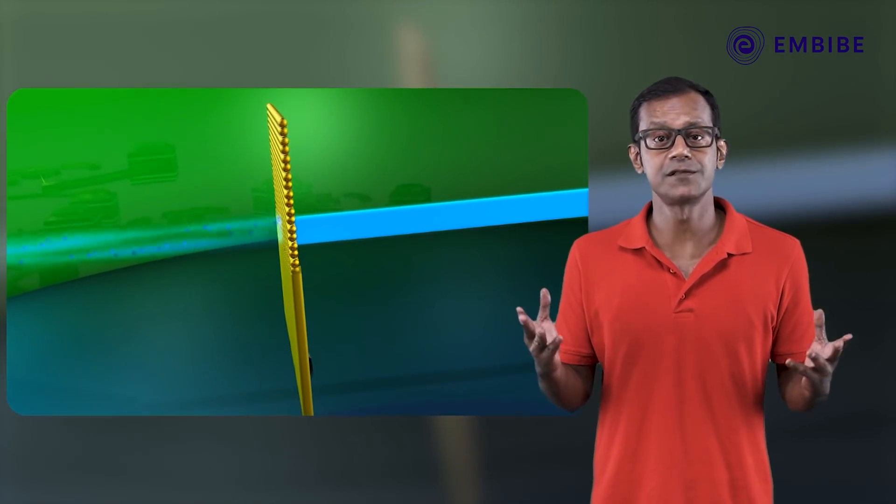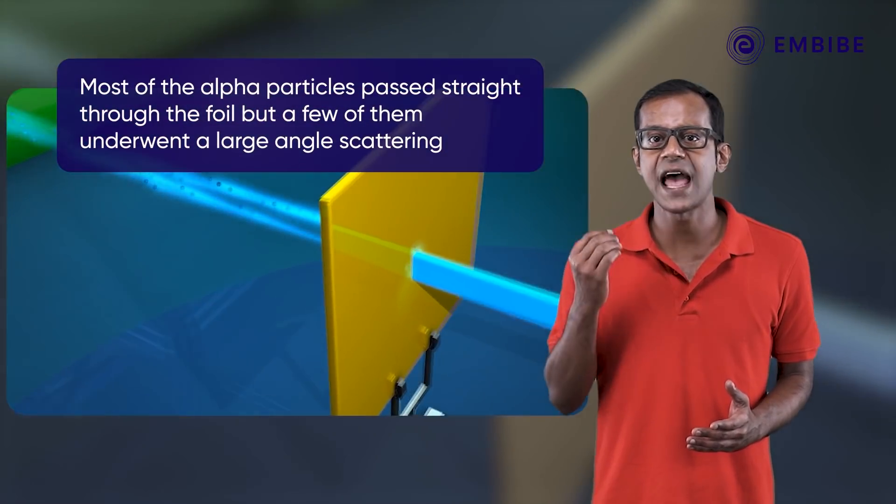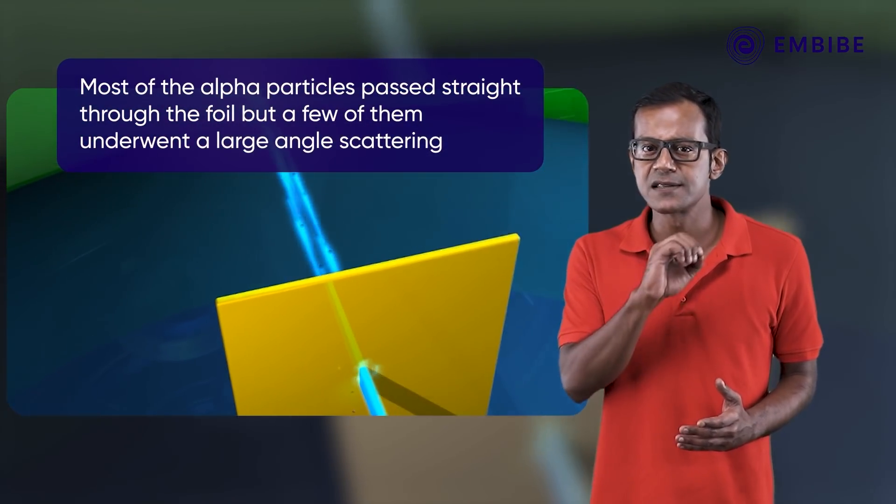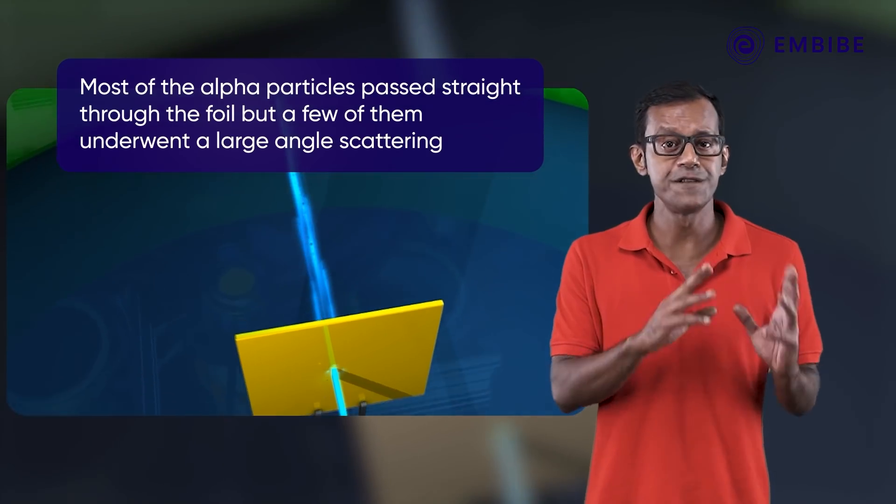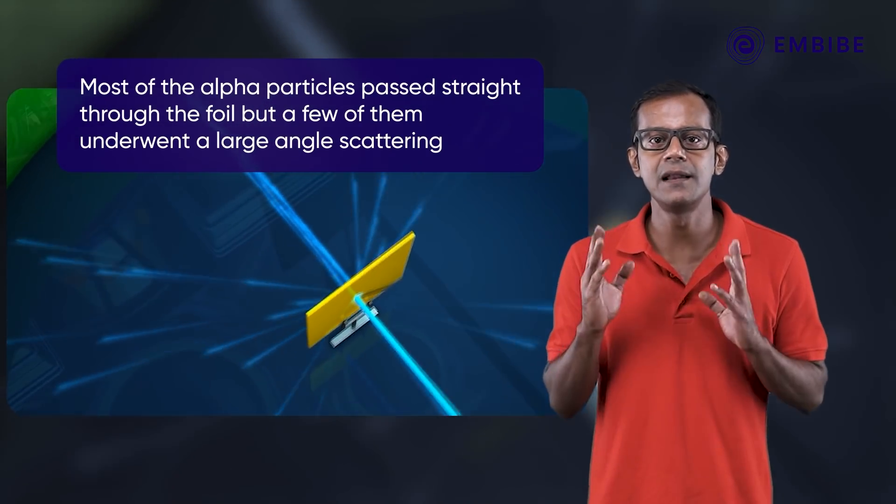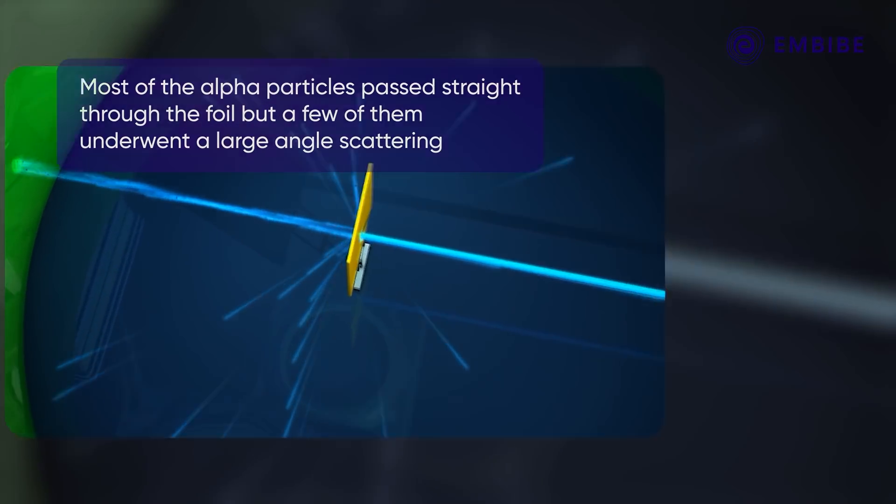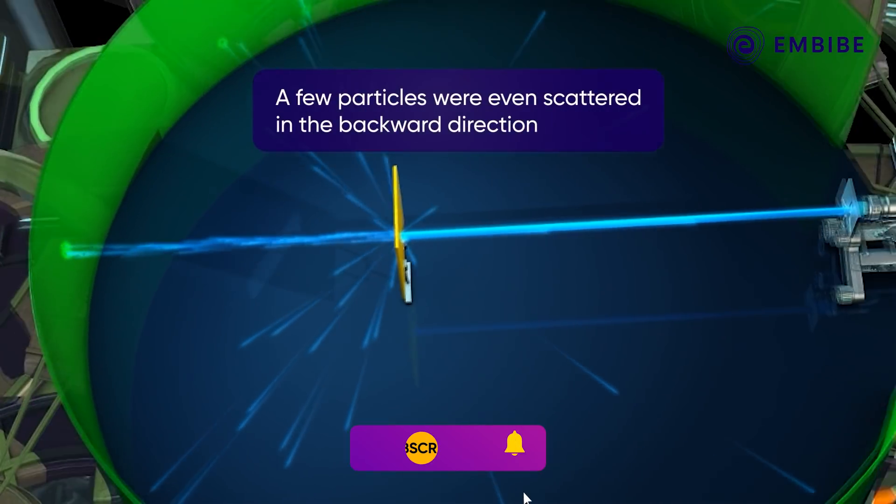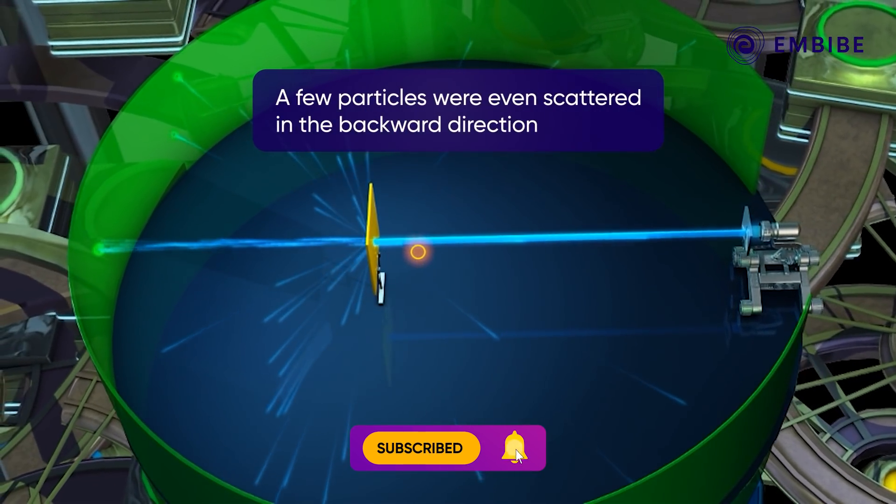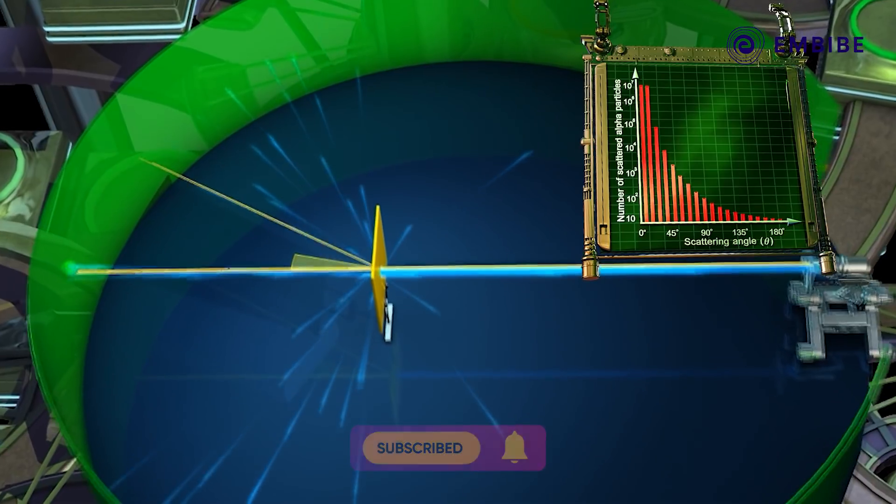But to the surprise of the scientists, they observed that even though most of the alpha particles passed through, occasionally a few particles encountered large angle scattering. A few were even scattered in the backward direction. The graph represents the number of alpha particles scattered at different angles.